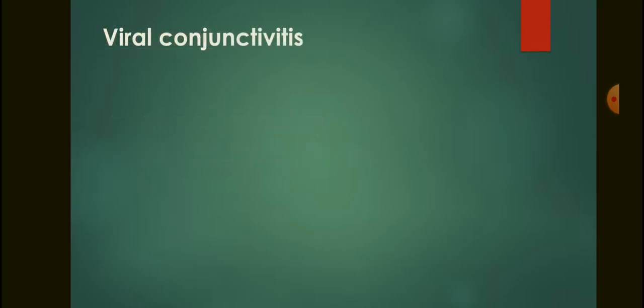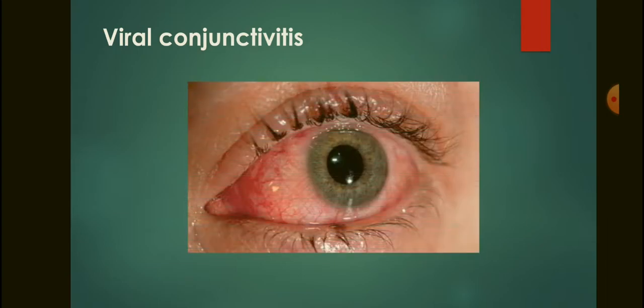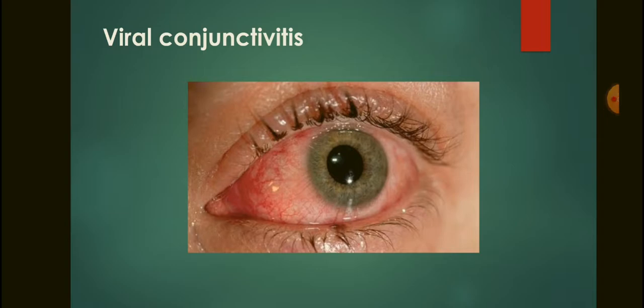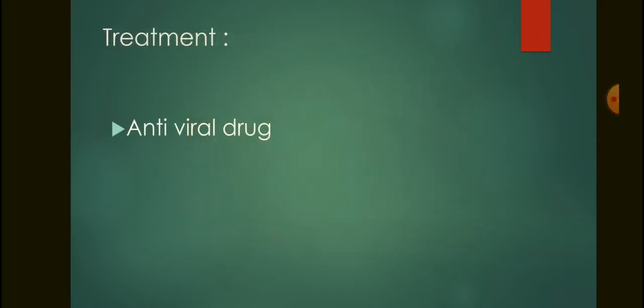Now let's move to viral conjunctivitis. The main difference between bacterial and viral conjunctivitis is that viral conjunctivitis has no discharge, whereas bacterial conjunctivitis produces a yellowish discharge. In viral conjunctivitis, the eye appears reddish, chemosis is present, and lacrimation can be seen. Viruses like adenovirus can cause viral conjunctivitis. Treatment includes antiviral drugs like acyclovir and idoxuridine.